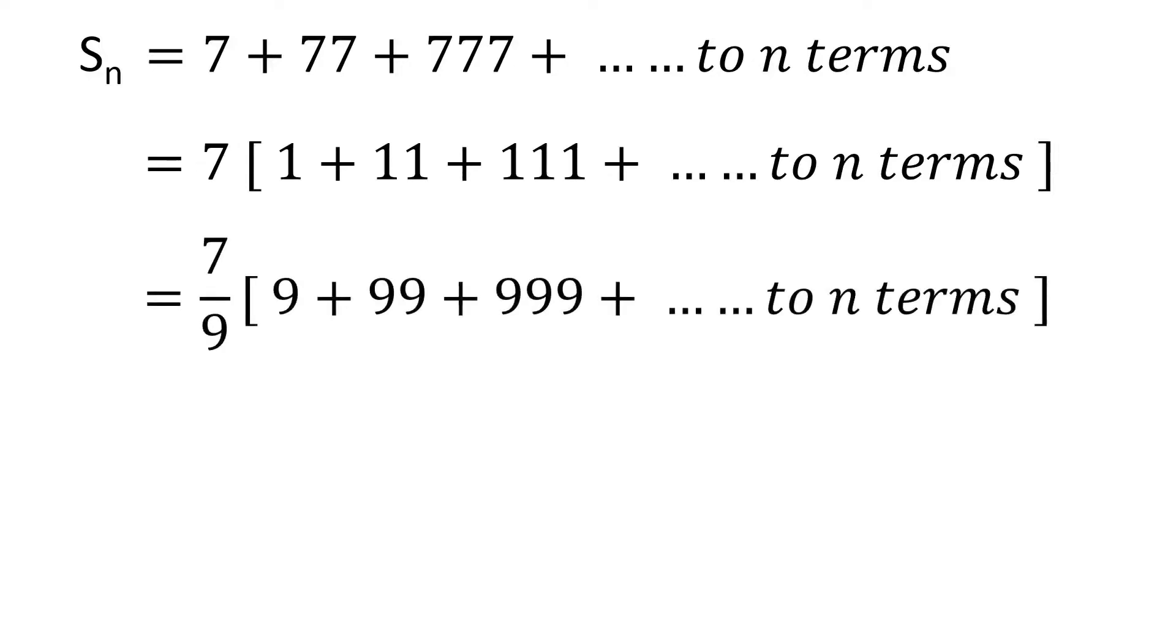Let's multiply each term in the square brackets with 9 and divide the whole series by 9. Since we have multiplied and divided the whole series by 9, it does not affect the sum of this series.